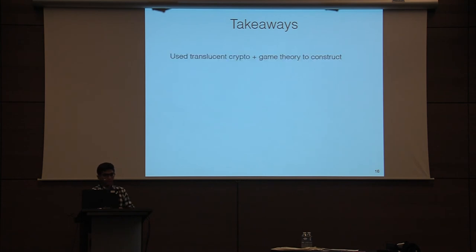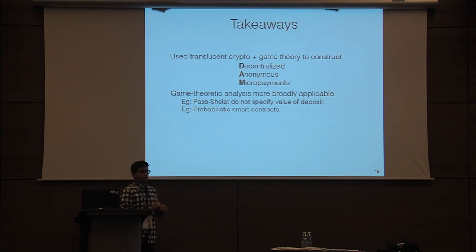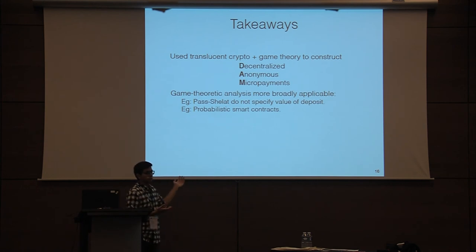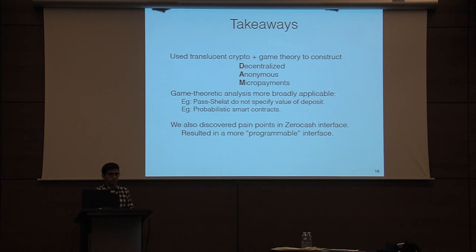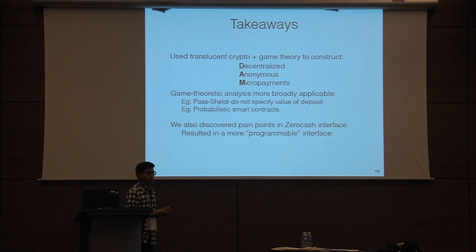To conclude, the key idea from our paper is that we used translucent crypto plus game theory to construct decentralized anonymous micropayments. The game theory analysis is applicable not only to our setting but also to others — for example, the Parson-Shalat paper had the idea of deposits but didn't specify what the value should be. It's also applicable to probabilistic smart contracts. Finally, we extended the interface of ZeroCash to be more expressive and programmable, and we're already using this added programmability in new applications we're working on right now.